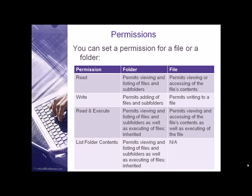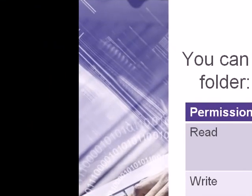Now that we've learned about users and setting up user accounts, let's talk about permissions and what different permissions allow a user to do. The first permission is read — on a folder, it lets a person view and list the files and subfolders inside; on a file, it permits viewing or accessing the file's contents. A write permission on a folder lets the user add files and subfolders, and on a file it allows them to write to that file.